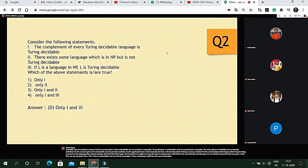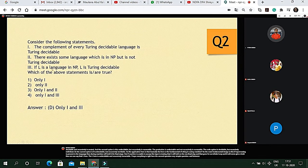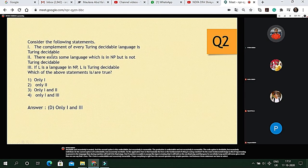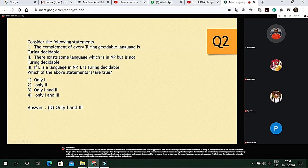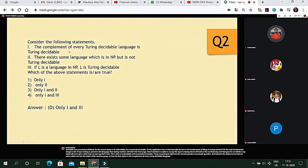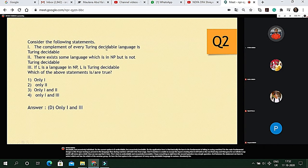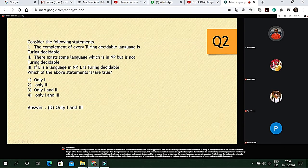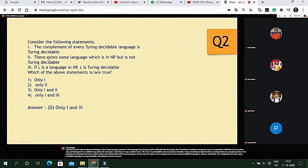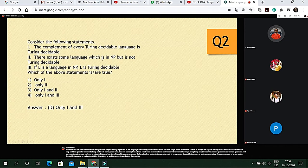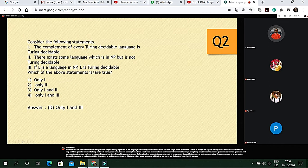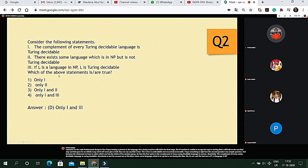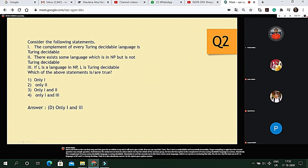Here is the second question. Between three statements we have to select which of the statements are true. The first option is the complement of every Turing decidable language is Turing decidable. Absolutely true. The second one is there exists some language which is in NP but is not Turing decidable. No it's not. And the last one is if L is language in NP and L is Turing decidable. Yeah it is also absolutely correct. So the option is option number four. One and three are correct.